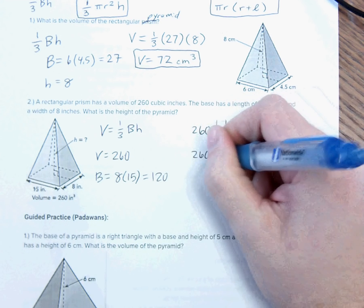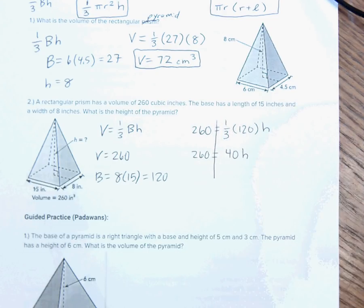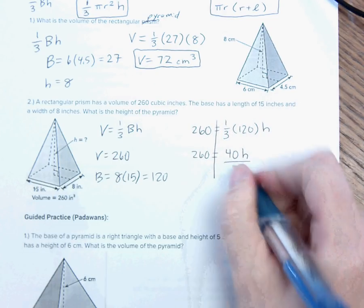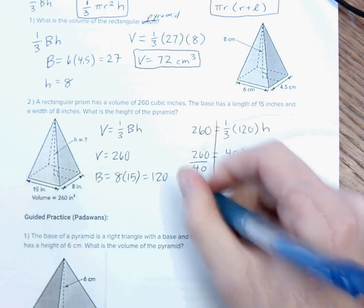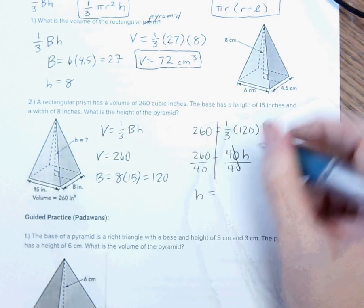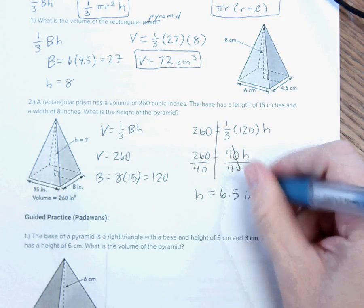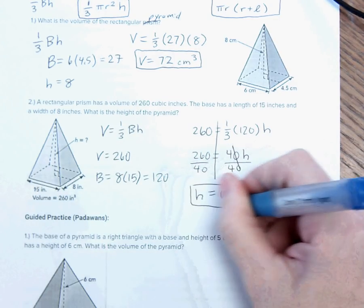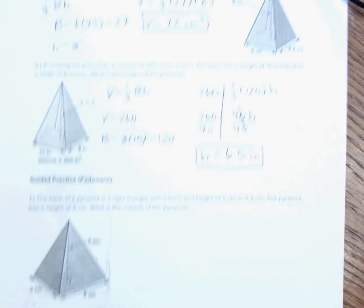260 equals a third of 120, which is 40, times the height. So, divide by 40, and that is going to give me h equals 6.5, and the unit is inches. Alright, so basically we set it up like an equation, so keep that in mind. We did similar things with cylinders.